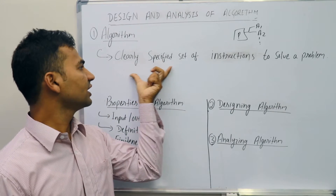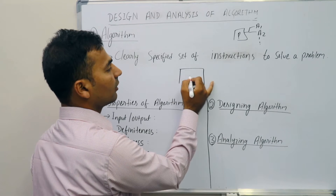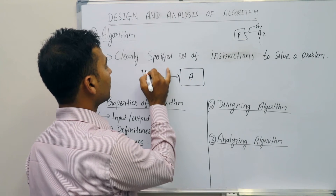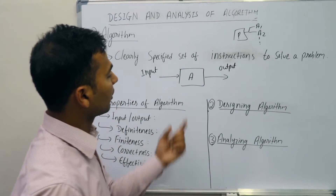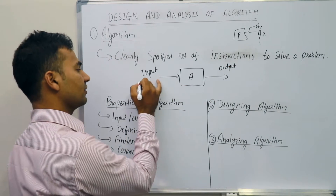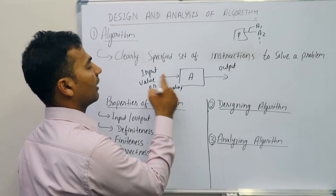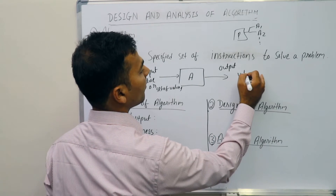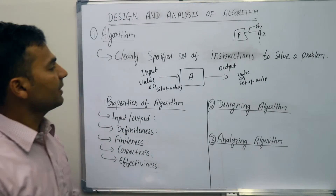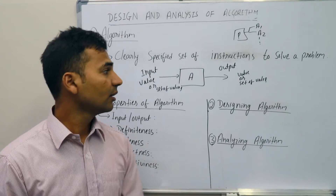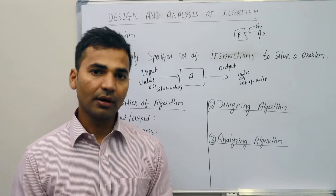An algorithm is a clearly specified set of instructions to solve a problem. Algorithm A is a computational process that takes some value or set of values as input and gives a value or set of values as output. Basically, the algorithm is independent of any machines, compilers, or programming language — you can implement an algorithm in any language, any compiler, or any machine.